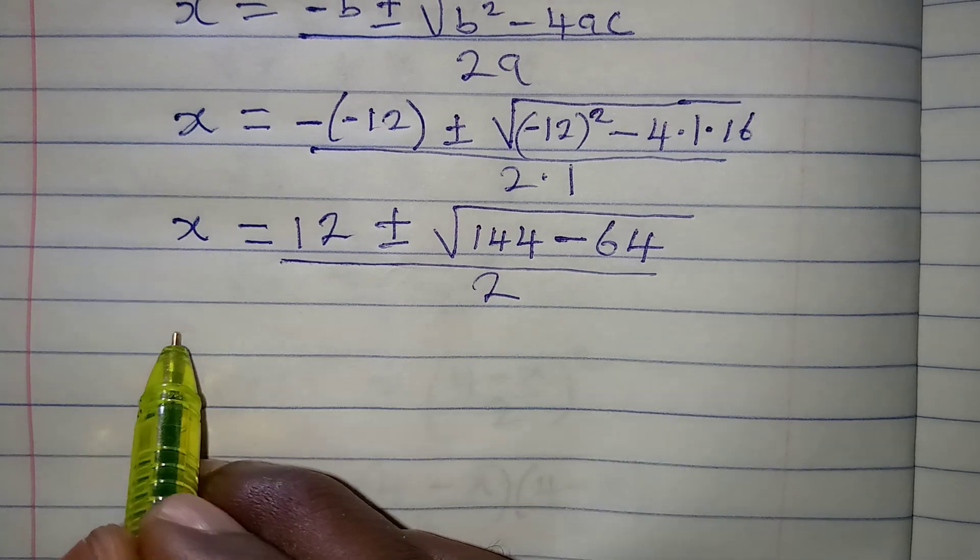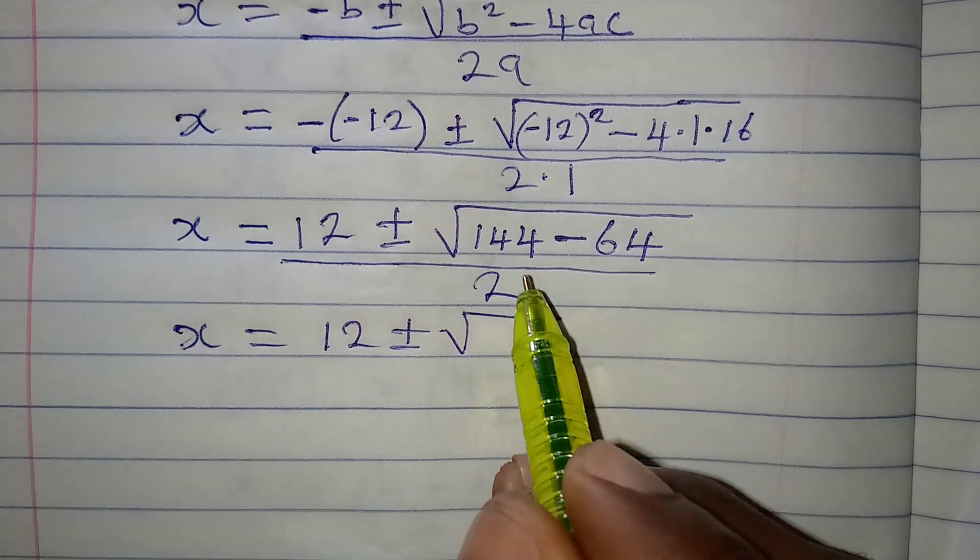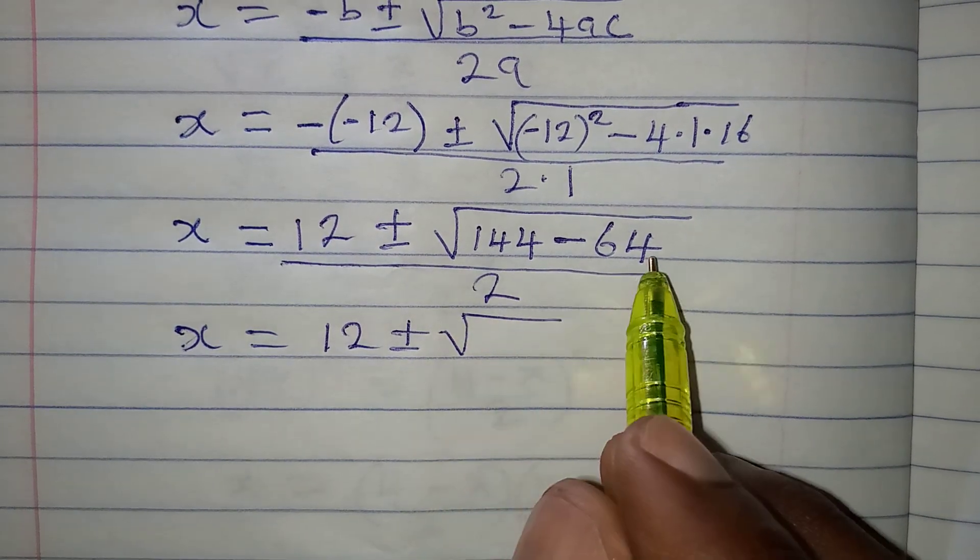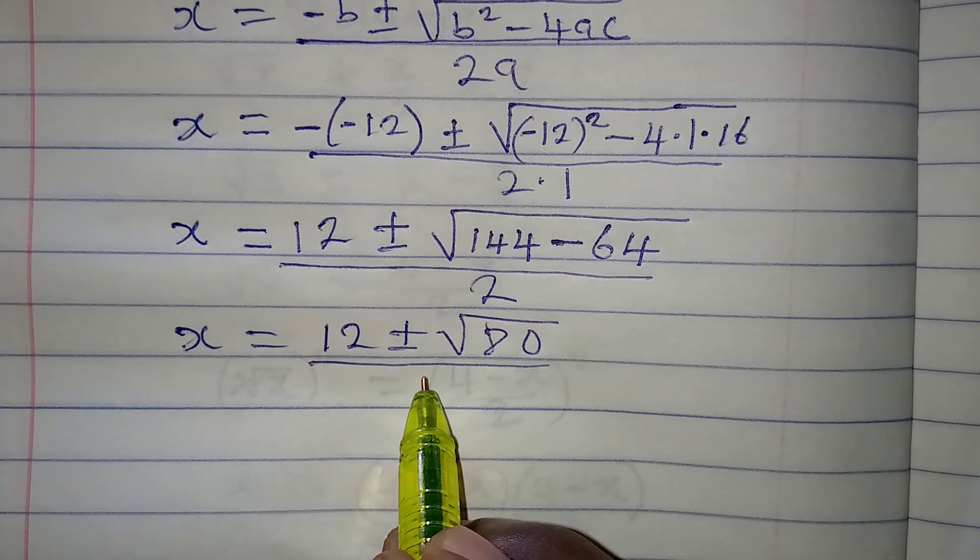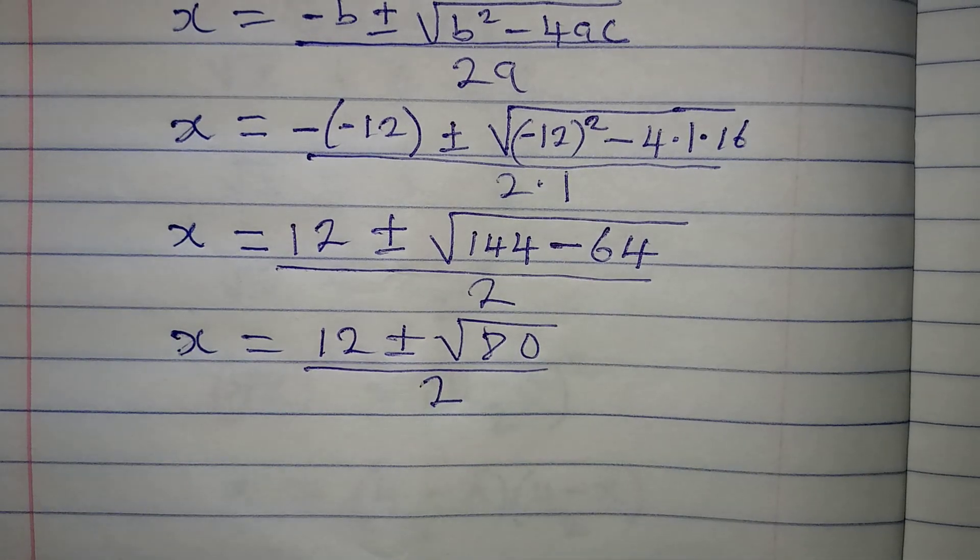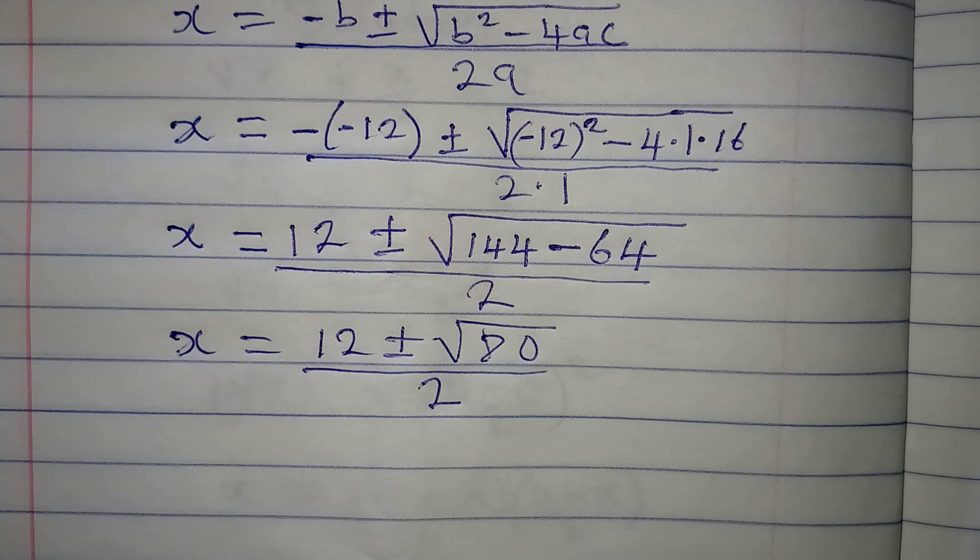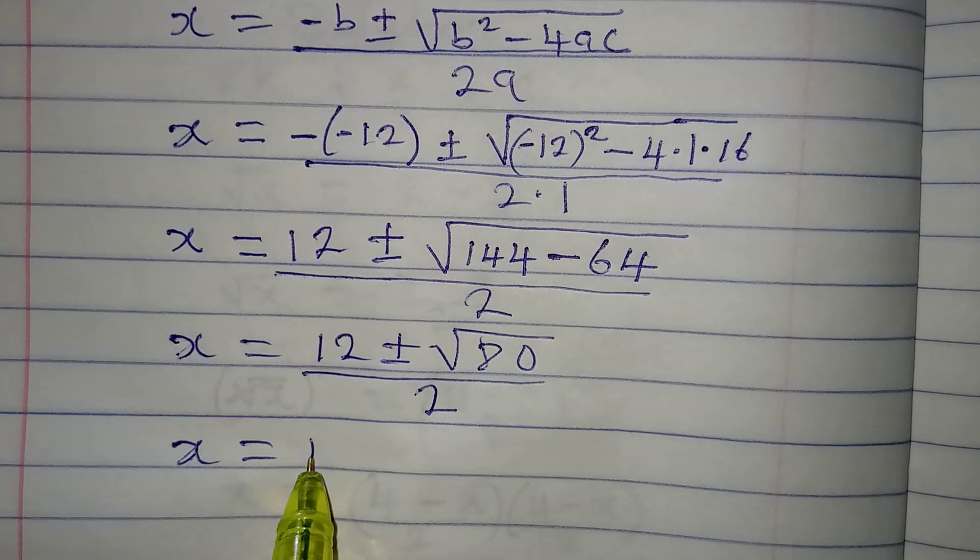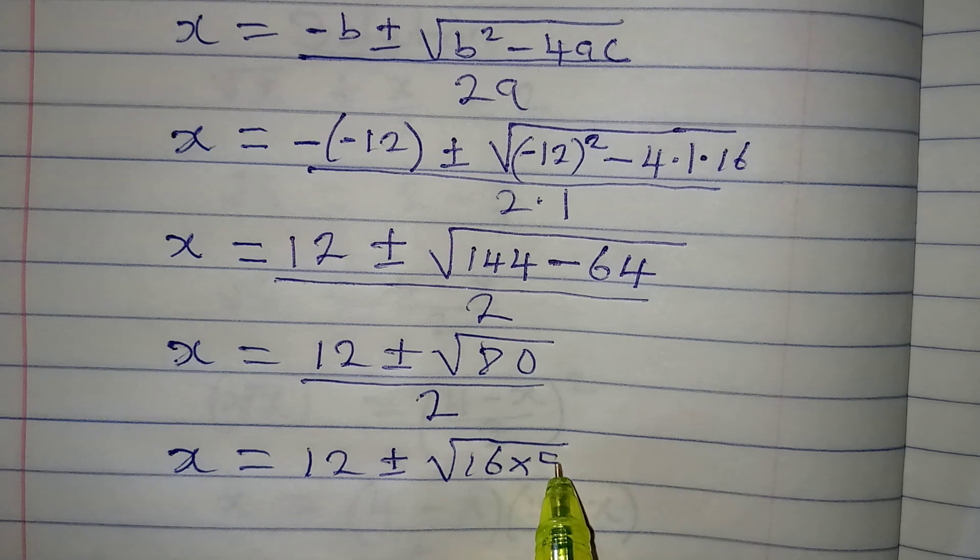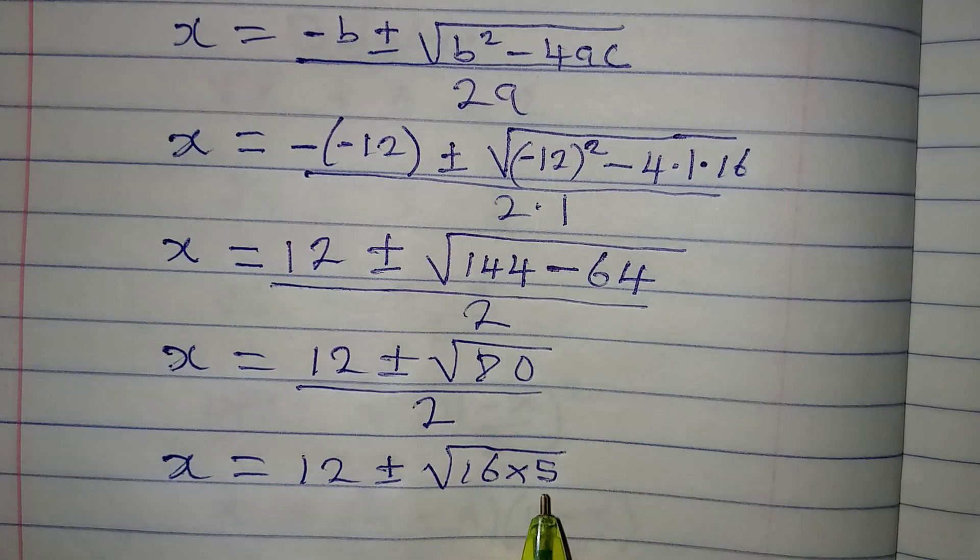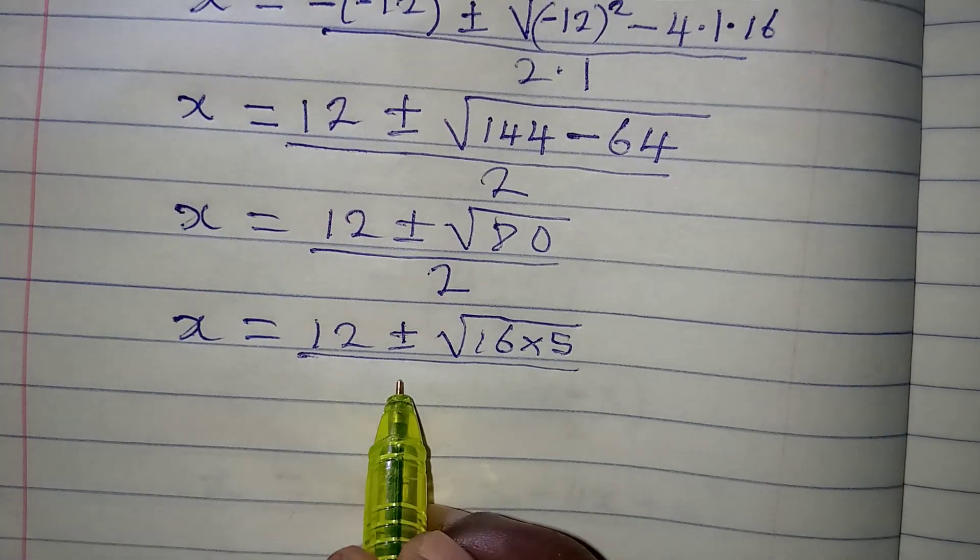Let's continue. x will be equal to 12, positive or negative. Then 144 minus 64 will give us 80, and this is over 2. Now, let us continue with this so that we'll have x equal to 12, positive or negative. 80 is 16 times 5, and I brought 16 out because it is a perfect square, which is over 2.